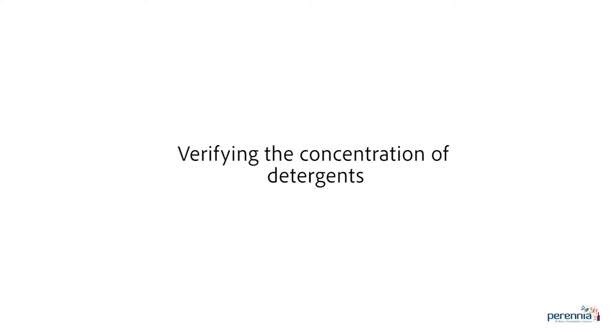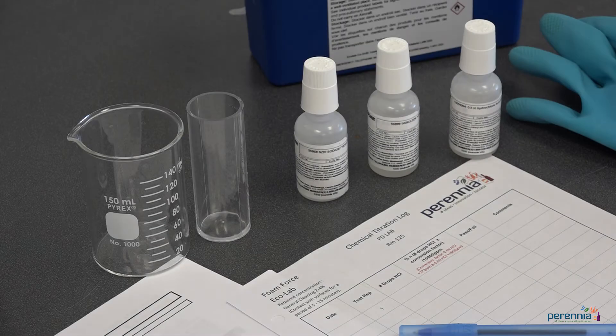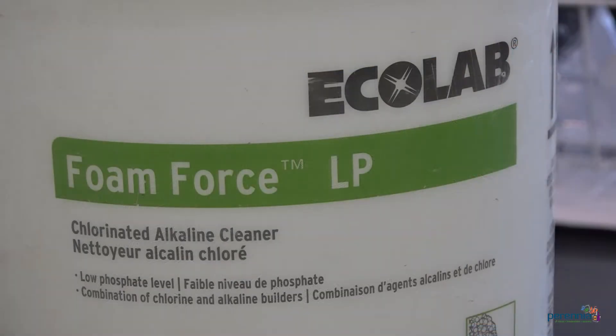To ensure you're using the correct concentration of detergent for your sanitation procedures, you can verify the concentration by performing a titration. For today's demonstration we will use Ecolab's Foam Force, a chlorinated alkaline detergent used for cleaning stainless steel equipment and environmental surfaces within a production facility to remove protein, fat and carbohydrate soils. To effectively remove these soils the foam must have a contact time of 5 to 15 minutes and the concentration when mixed with water must be between 2 to 4 percent. Less than 2 percent we may not be removing all of the soils, and greater than 4 percent we may be leaving behind chemical after the final rinse or we may be wasting chemical.